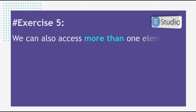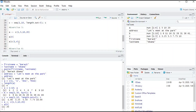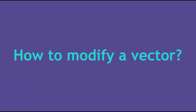We can also access more than one element at a time. For example, to access the first and fourth elements, write a[c(1, 4)], and you get 1 and 20. Let's run the code — you can see 1 and 20 here, the first and the fourth elements.